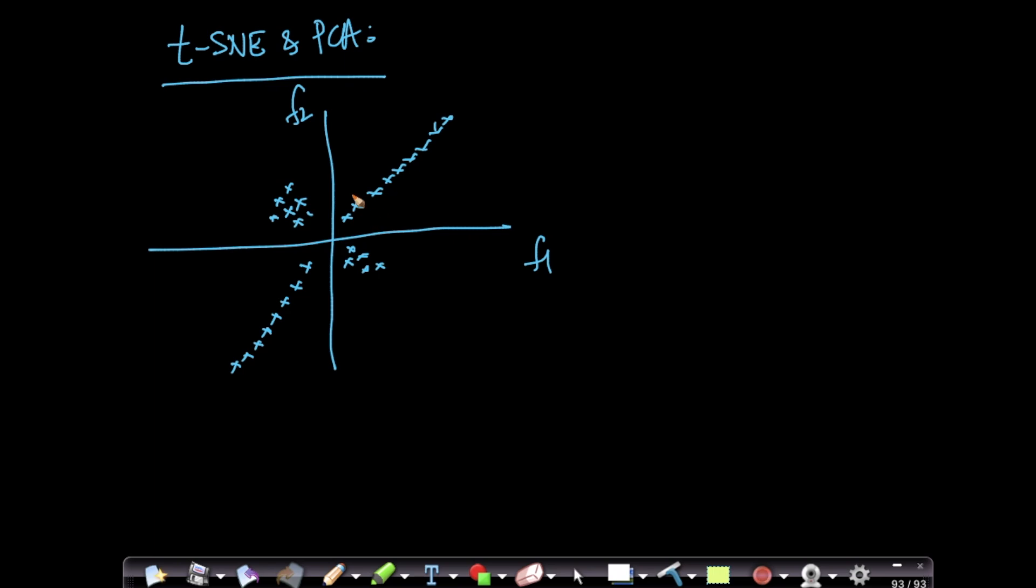My V1 will be in this direction if I'm trying to project data from 2D to 1D. This is a cluster of points, this is a cluster of points. So what happened? We saw this as one of the limitations of PCA.